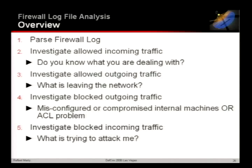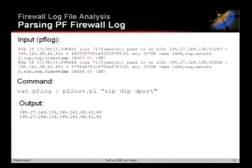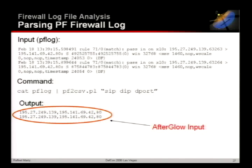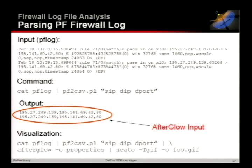The parsing part: I have a PF log file output. You cat that file and use PF to CSV to parse it. In this case I want source IP, destination IP, and destination port. The output is just those three fields delimited by a comma. Putting it all together: cat the log file, pipe through PF to CSV with the fields you want, pipe that into Afterglow with a property file, then pipe into GraphViz.